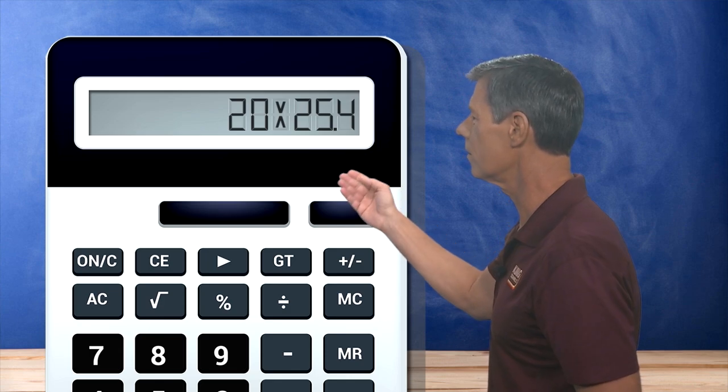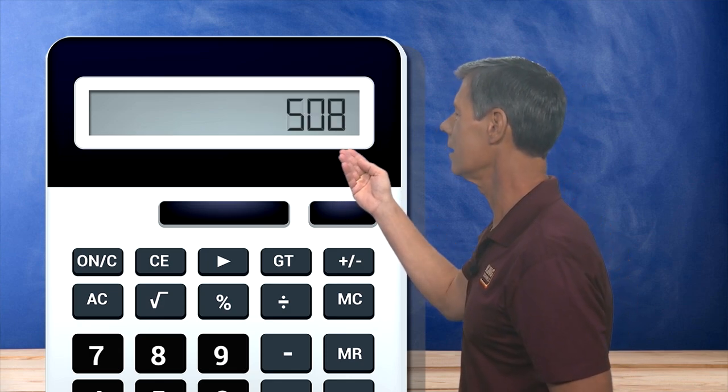To start, let's say you need to convert inches to millimeters. Well to do that, just multiply the number of inches by 25.4 because there's 25.4 millimeters in one inch. For example, 20 inches times 25.4 is 508 millimeters.